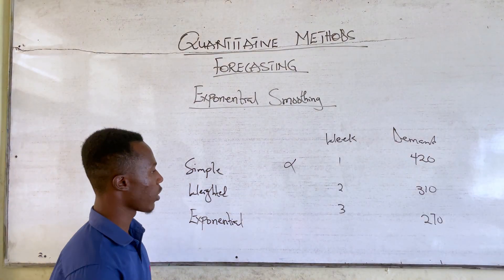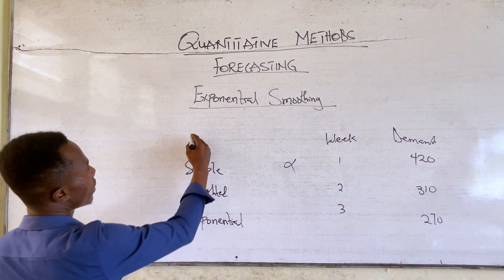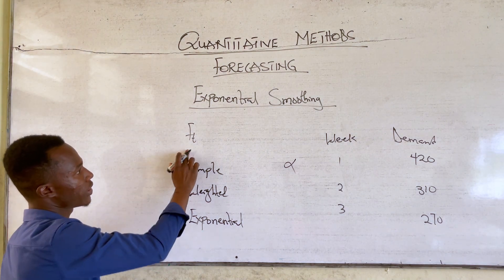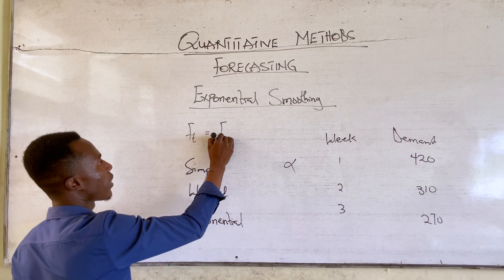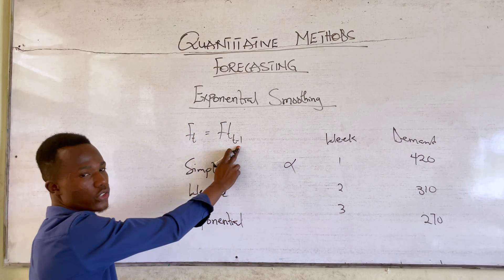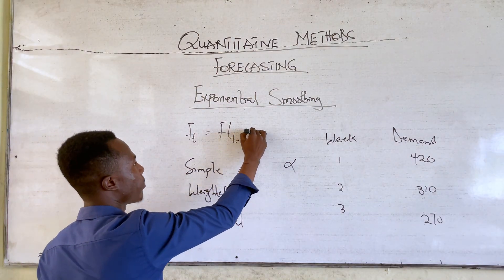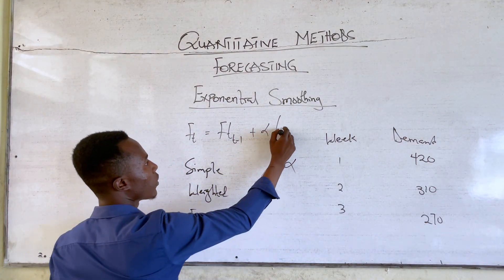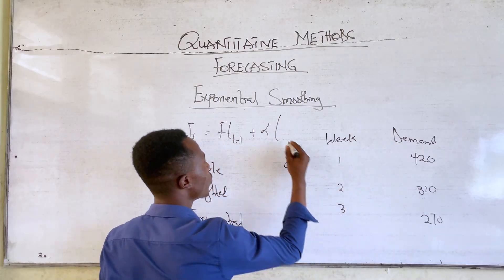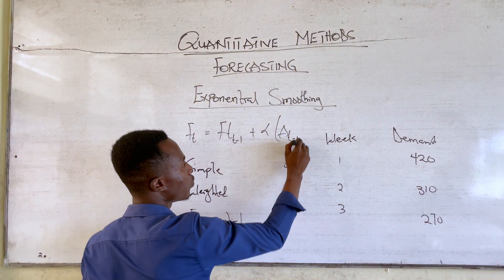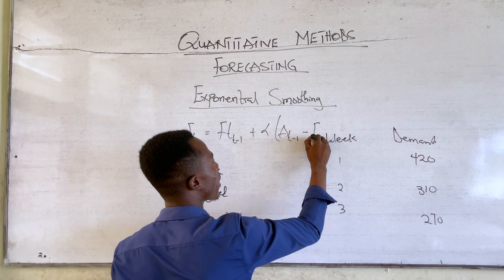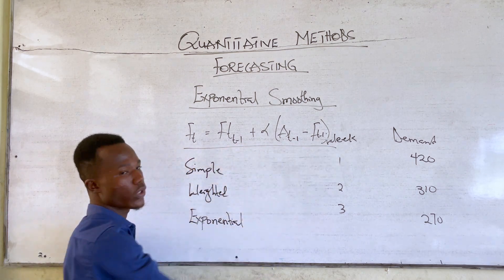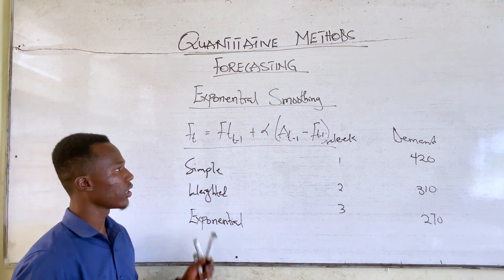But on the exponential moving average, we are going to have a formula. Suppose you are forecasting for a particular period, that is the current period C. You are supposed to have the forecast for the previous week — that is why it is minus 1 — then plus your constant or weight, multiplied by your actual demand for the previous week, minus the forecast for the previous week. This is our formula for exponential smoothing.